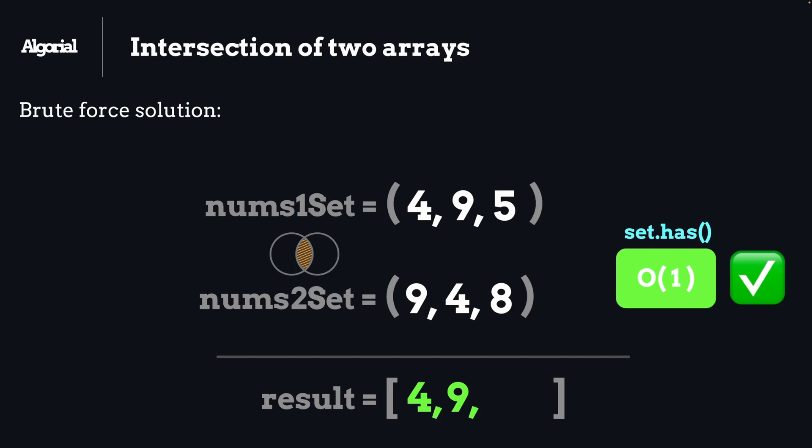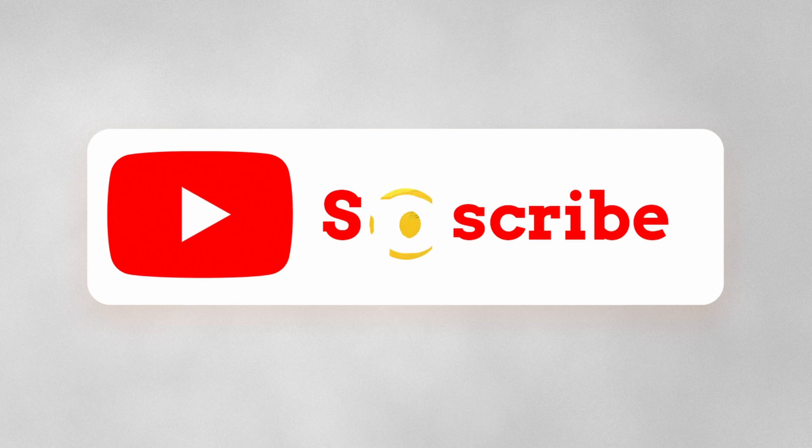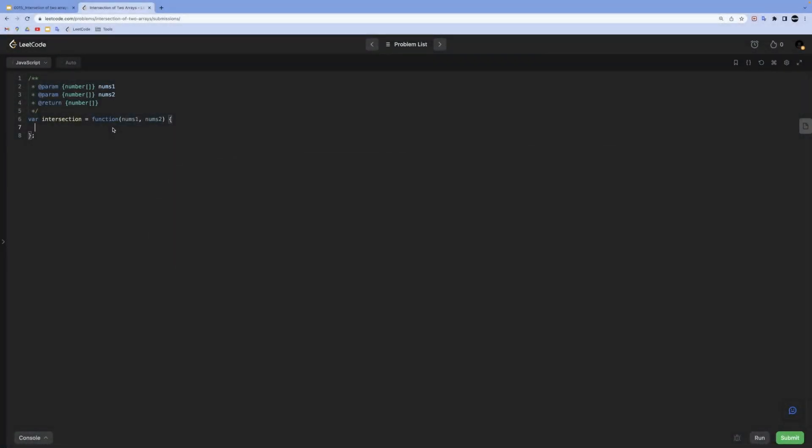Let's see how we are going to implement this in code. Here we are in LeetCode. For sorting solution first we need to sort both arrays like nums1.sort, we are going to do (a, b) arrow function a minus b, and the same thing for nums2. Then we are going to need two variables for our pointers: let p1 equal to zero and let p2 equal to zero. Then our result array: let result equal to an empty array.